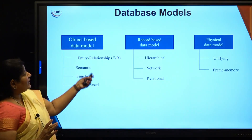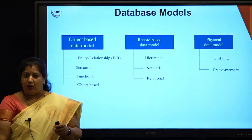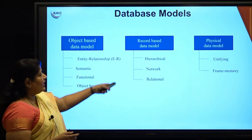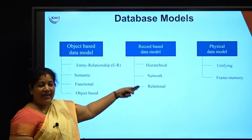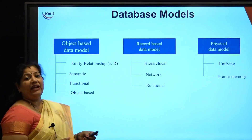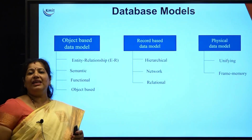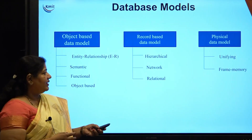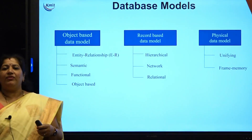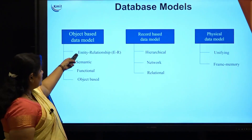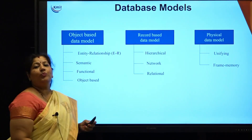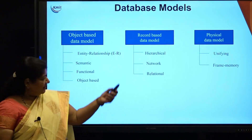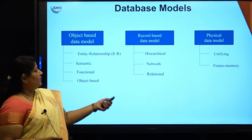Coming to what are the different types of data models? Beginning from the historical ways, we had hierarchical and network models, which were earlier used to describe the database structure. But most often nowadays, it is always relational, ER models, and object-oriented or object-based models. There are different categories and we will be seeing a few of them.